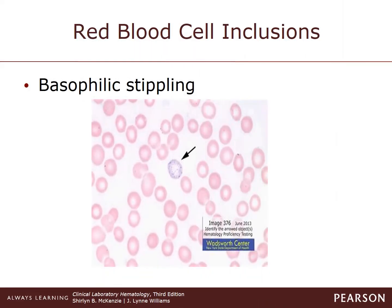Let's talk about basophilic stippling. These are red cells with bluish-black granular inclusions distributed throughout the entire cell area. These granules can vary in size and distribution from small and diffuse to coarse and punctate. The granules are composed of aggregated ribosomes and are sometimes associated with mitochondria or siderosomes. If you see any type of red cell inclusion, you're going to evaluate it as present. It can be associated with lead poisoning and certain types of anemias due to abnormal hemoglobin synthesis or thalassemia.